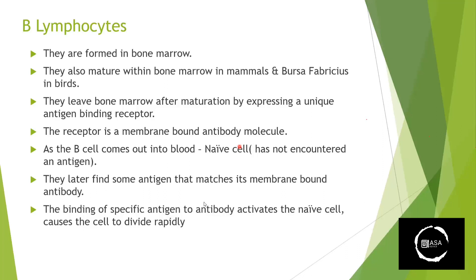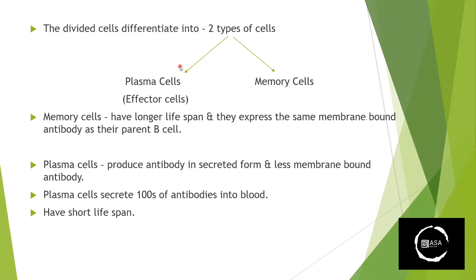B lymphocytes, upon activation, differentiate into plasma cells and memory cells. When the B cell receptor binds antigen, the cell replicates and differentiates — producing effector plasma cells and long-lived memory cells.